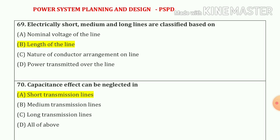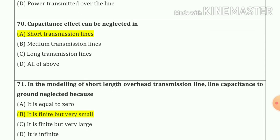Question number 69: electrically short, medium, and long transmission lines are classified based on the length of the line — option number B. Question number 70: capacitance effect can be neglected in a short transmission line — option number A.